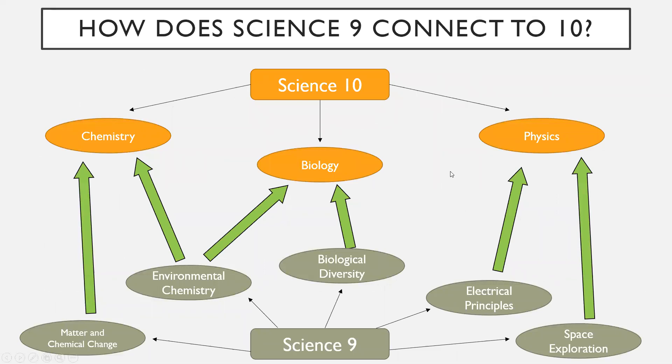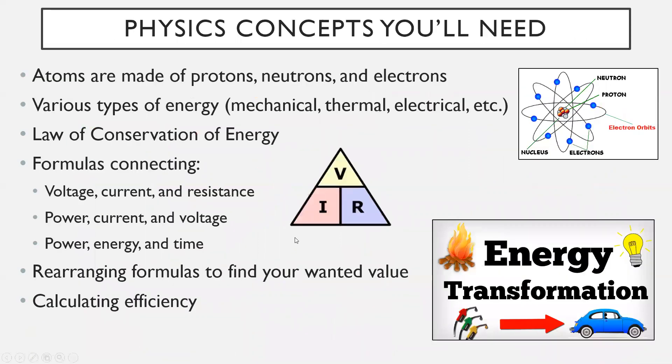We actually got to talk about what in Science 9 actually leads into physics. We had two units in Science 9 that I would call physics units. The last one we did was electrical principles. That was almost entirely physics. And then the very first unit of the year, which was space exploration, is also physics. Unfortunately, in terms of Science 10 physics, a lot of stuff in space exploration doesn't come back. Most, if not everything we're going to talk about today is right from electrical principles.